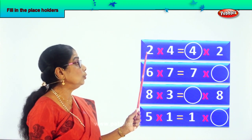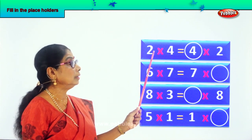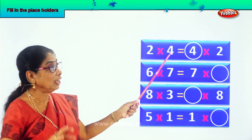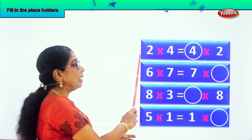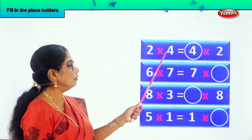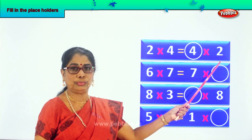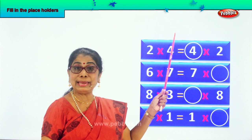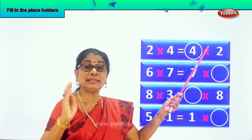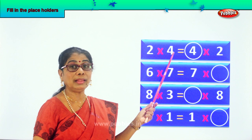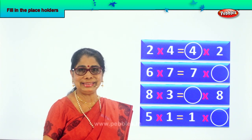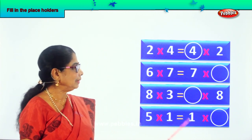Very good. Now you notice here, 2 into 4 has to be equal to 4 into 2. The numbers are just reversed. Here 2 and 4, here 4 and 2. Both the numbers have to be the same. The answer is the same. 2 fours are 8. 4 twos are 8.